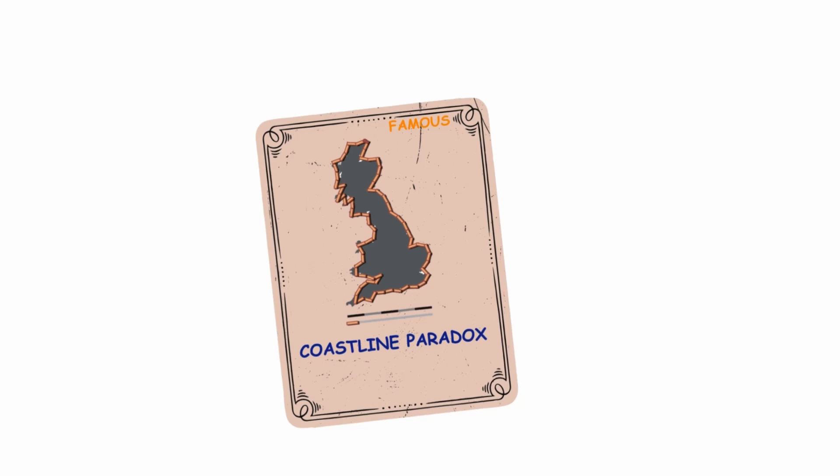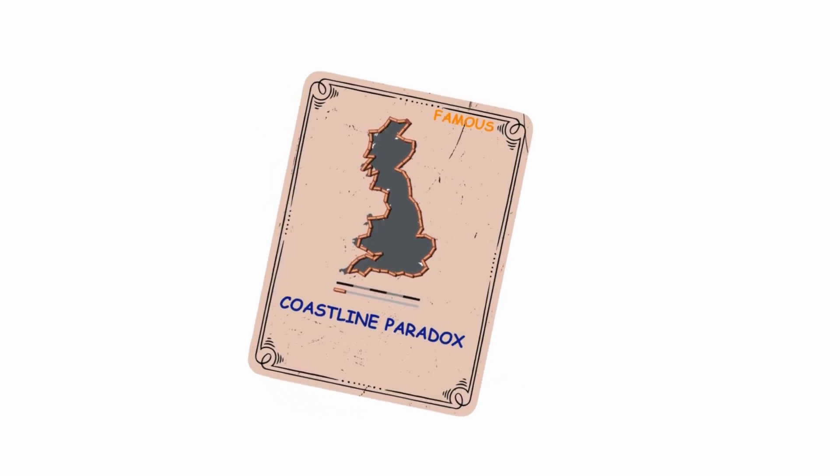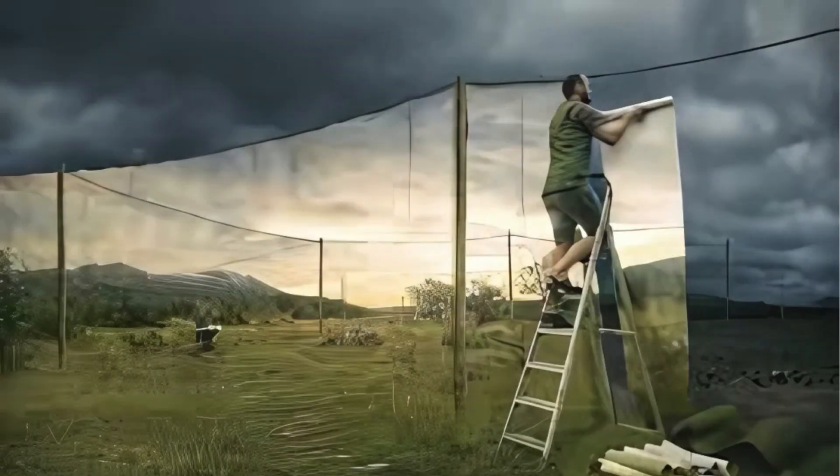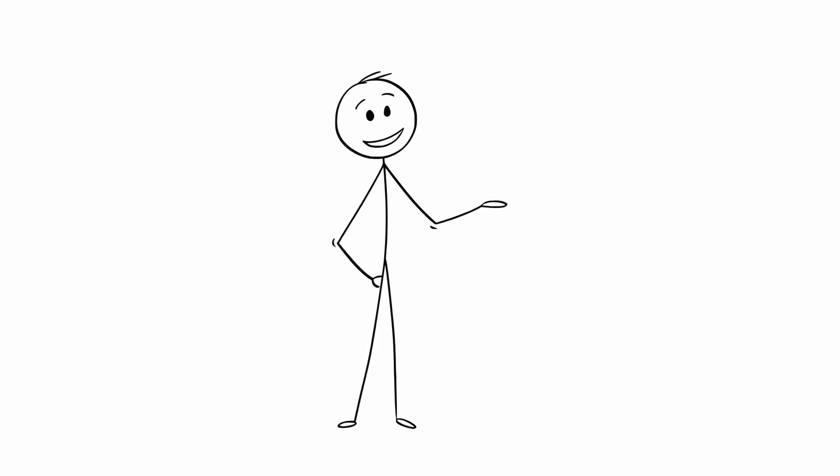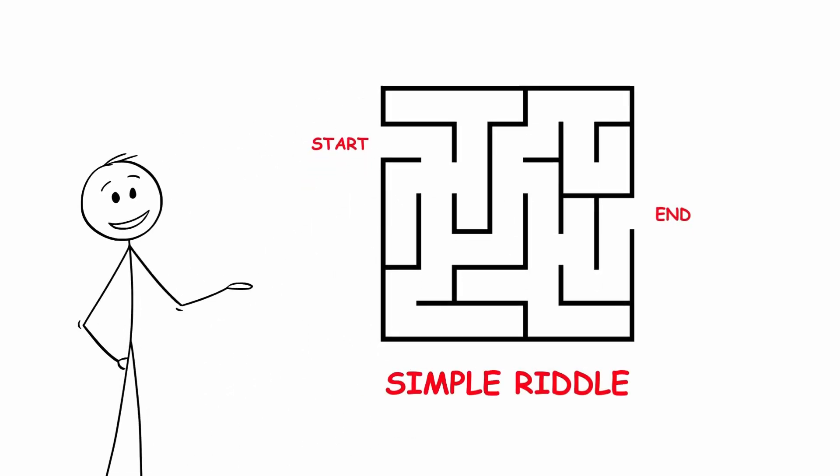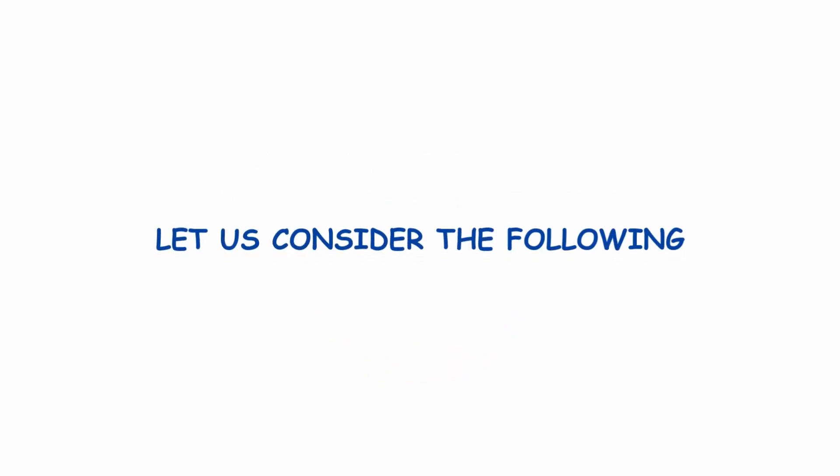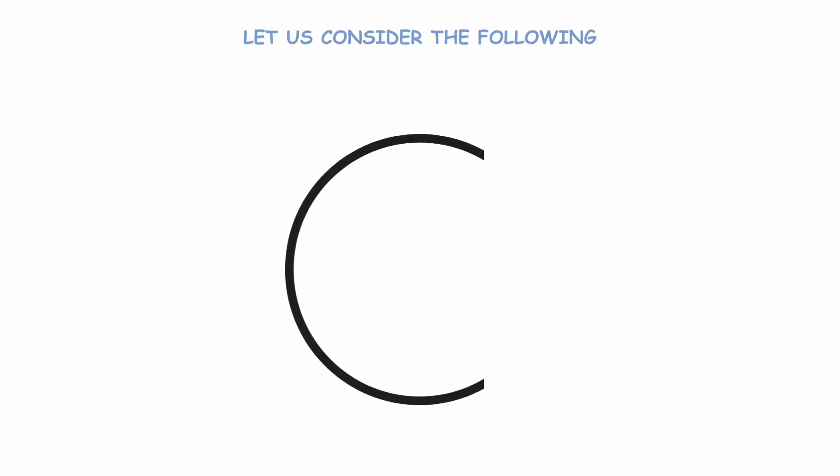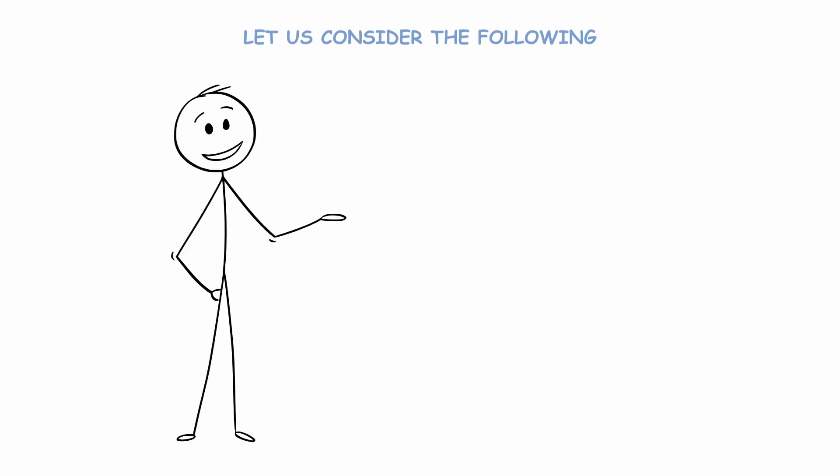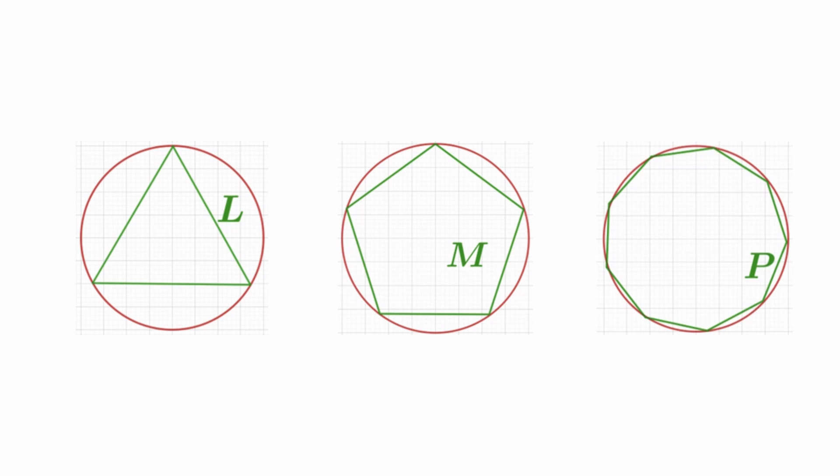The Coastline Paradox: One of the most famous applications of the fractal concept exemplifies how reality can be surprisingly complex and how, even in something as seemingly simple as the measurement of a coastline, fractal properties appear. Let us consider the following. Suppose we need to calculate the length of the circumference, and we only have the measurement patterns L, M, P respectively.